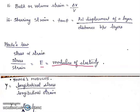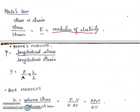Young's modulus: Y is equal to longitudinal stress upon longitudinal strain. So Y is equal to force upon area, multiplied by L upon delta L.